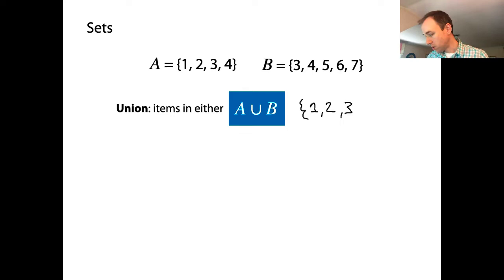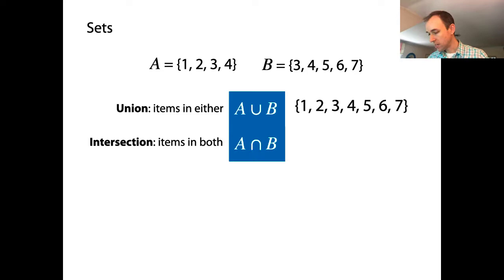So that'll be 1, which is in A; 2, which is in A; 3, which is in both; 4, which is in both; 5, which is in B; 6, which is in B; 7, which is in B. The intersection is the set of items that are in both sets A and B. Which items are in both A and B? Just 3 and 4.